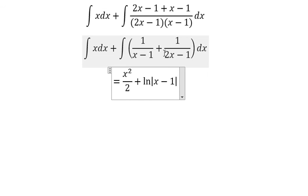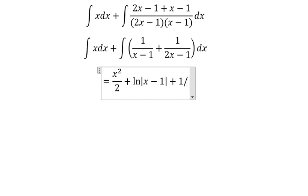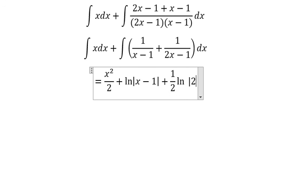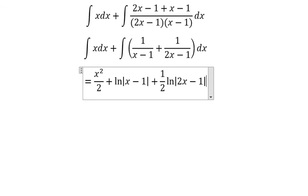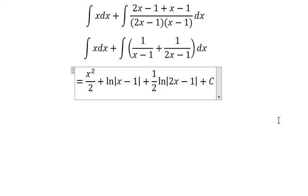Because we have the number 2 here, we get 1 over 2 times the natural logarithm of the absolute value of 2x minus 1, and we have the constant C.